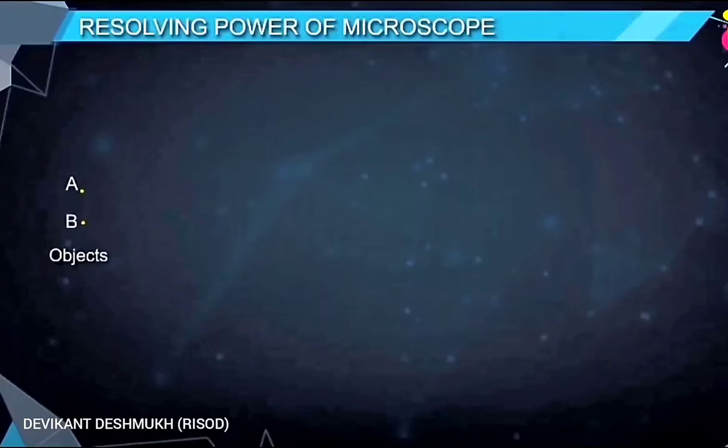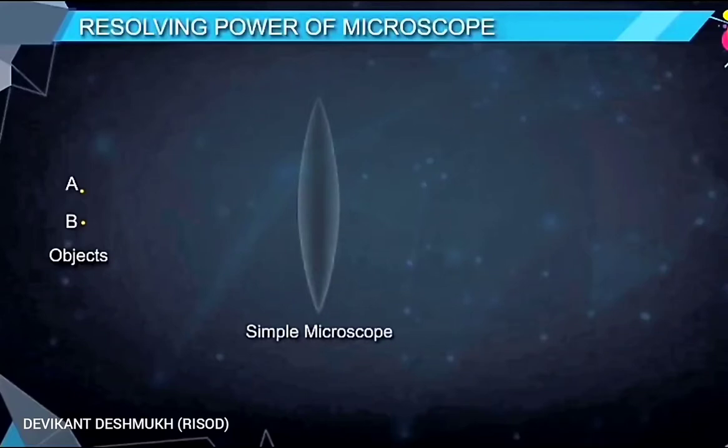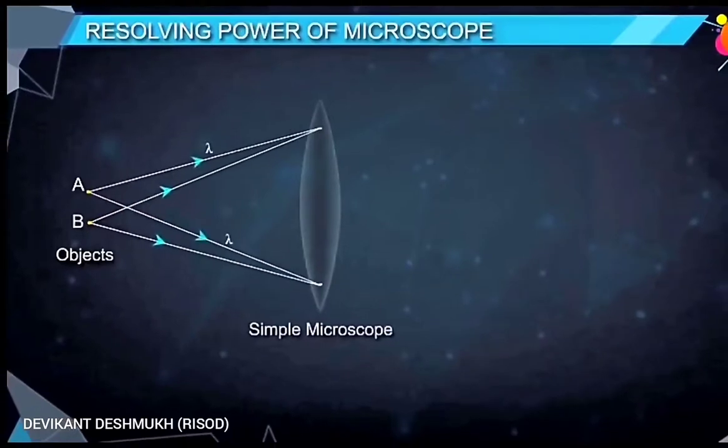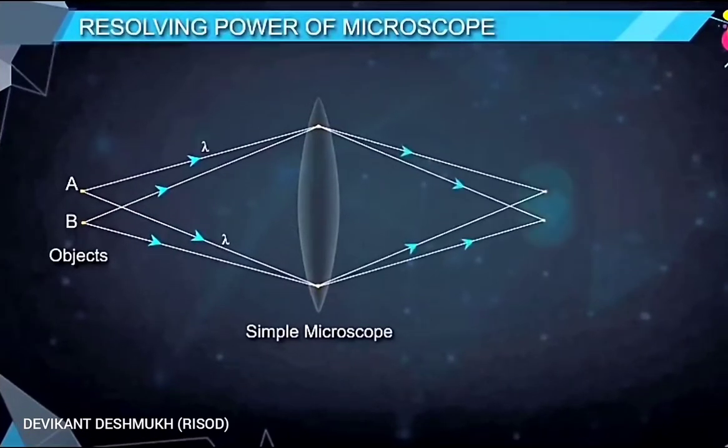Consider two point objects A and B lying very close to each other and are observed through simple microscope. Its image in the form of diffraction pattern is obtained on its screen.